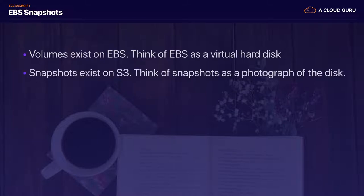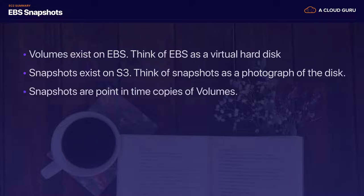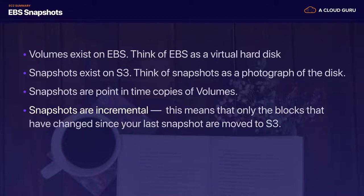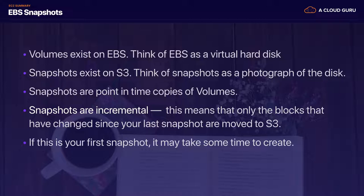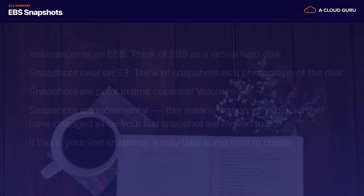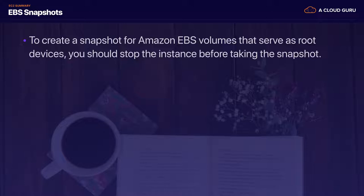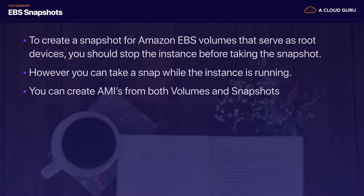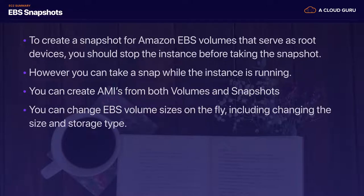EBS volumes exist on EBS — think of it as a virtual hard disk drive in the cloud. Snapshots exist on S3; think of snapshots as a photograph of the disc. Snapshots are point-in-time copies of volumes and are incremental, meaning only the blocks that have changed since your last snapshot are moved to S3. The first snapshot may take some time; subsequent snapshots only replicate the deltas. To create a snapshot for root device volumes, always try to stop the instance first for a consistent snapshot, though it is optional. You can create AMIs from both volumes and snapshots.